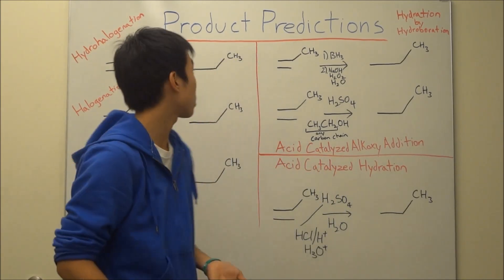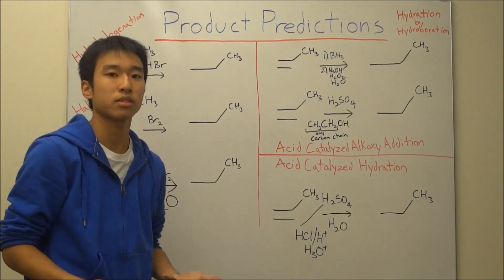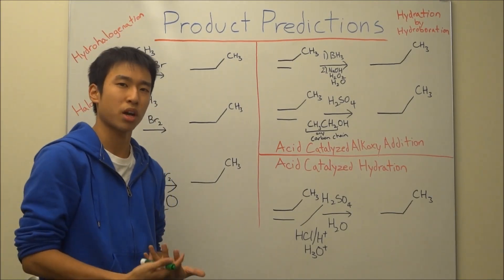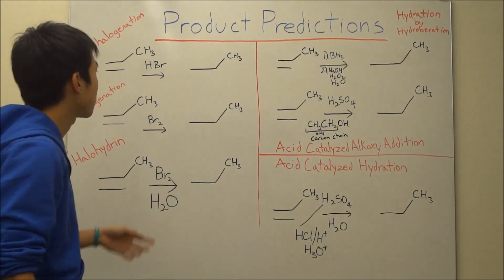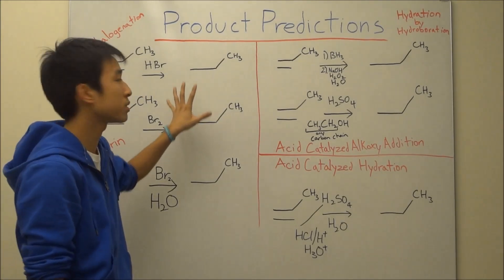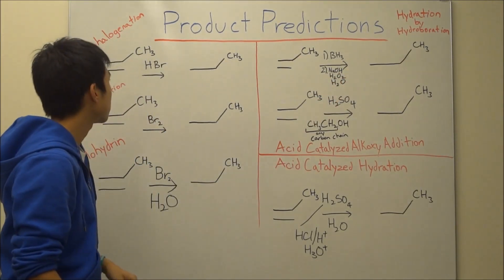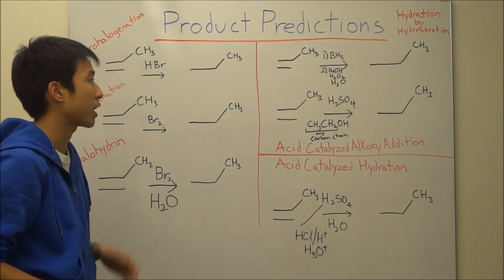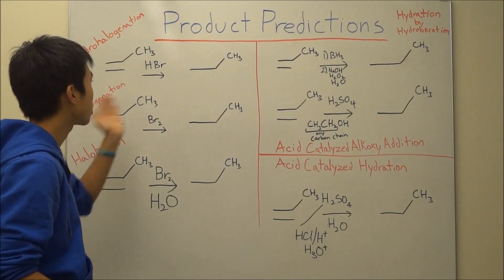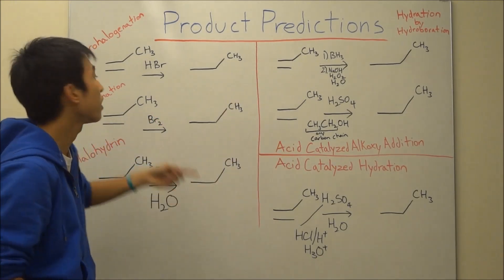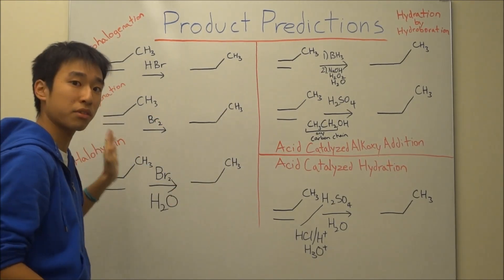This video is going to be perfect for you guys if you are on the test and you run out of time and you have some product prediction questions left. On the test you probably won't see this right side, but the gist of it is that in any alkene reaction that you guys learned, nothing is really going to change in your molecule other than the double bond. That's going to be gone after you're done with the reaction.